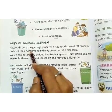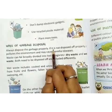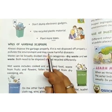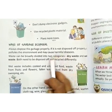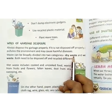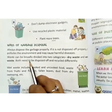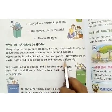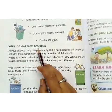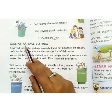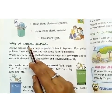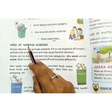Always dispose the garbage properly. If it is not disposed of properly, it pollutes the environment and may cause harmful diseases. Waste can be broadly divided into two categories: dry waste and wet waste. Both need to be disposed of and recycled differently. Disposal means the process of getting rid of something. At home or outside, we have to dispose the garbage in a proper way.